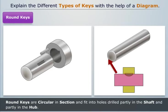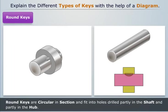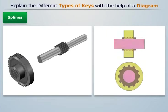Round keys are circular in section and fit into holes drilled partly in the shaft and partly in the hub.